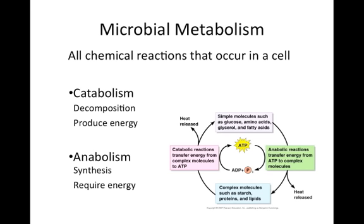This is a diagram that summarizes the relationship between catabolism and anabolism. Starting at the bottom in the blue box, we see the three macromolecules that provide energy for us: starch, proteins, and lipids. Moving clockwise in the diagram up to the purple box, we see that the macromolecules can be broken up into their monomers — glucose, amino acids, glycerol, and fatty acids. The pink box indicates that these reactions that break down the complex macromolecules are catabolic reactions.